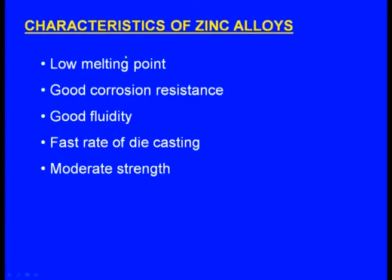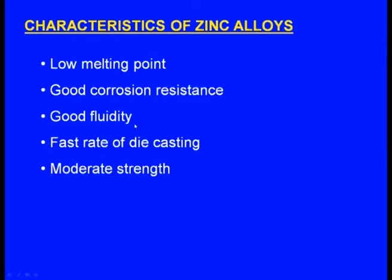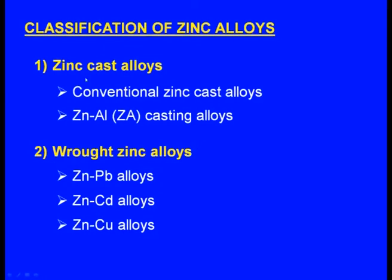Next, let us see the zinc cast alloys. The characteristics of zinc alloys: low melting point, good corrosion resistance, good fluidity, fast rate of die casting and moderate strength. The classification of zinc alloys: broadly they can be classified as zinc cast alloys and zinc wrought alloys. Zinc cast alloys are further classified into two types: conventional zinc cast alloys and zinc aluminum cast alloys.